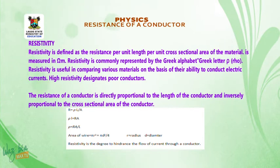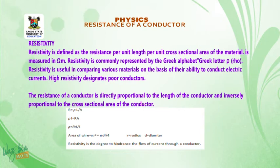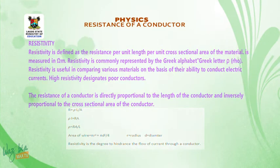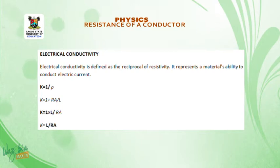When talking about area, the area of the wire is πr² or πD²/4. Resistivity is the degree of endurance to the flow of current through a conductor. Another thing we have to understand is electrical conductivity. Electrical conductivity is the reciprocal of resistivity.